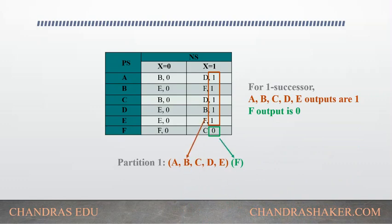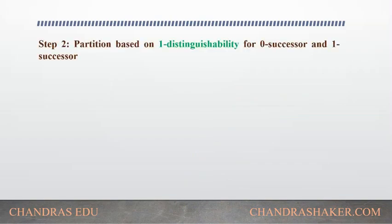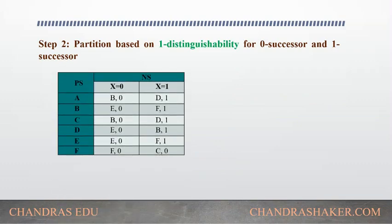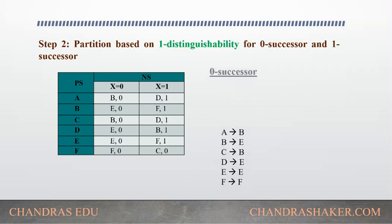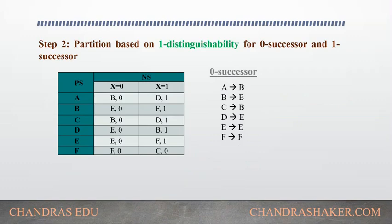The second step is to partition based on 1-distinguishability. Here we need to consider the 0-successor as well as the 1-successor. We will take the state machine and look at the next states belonging to each present state for x equal to 0. For example, for state a the next state is b, and for state b the next state is e, for x equal to 0. We already have the partition a, b, c, d, e as one group and f as another.